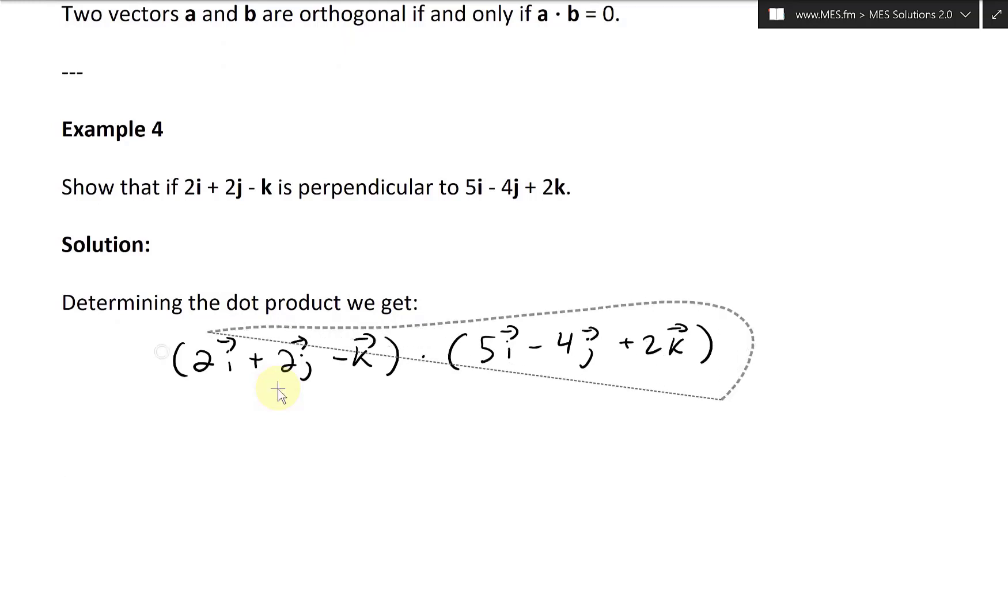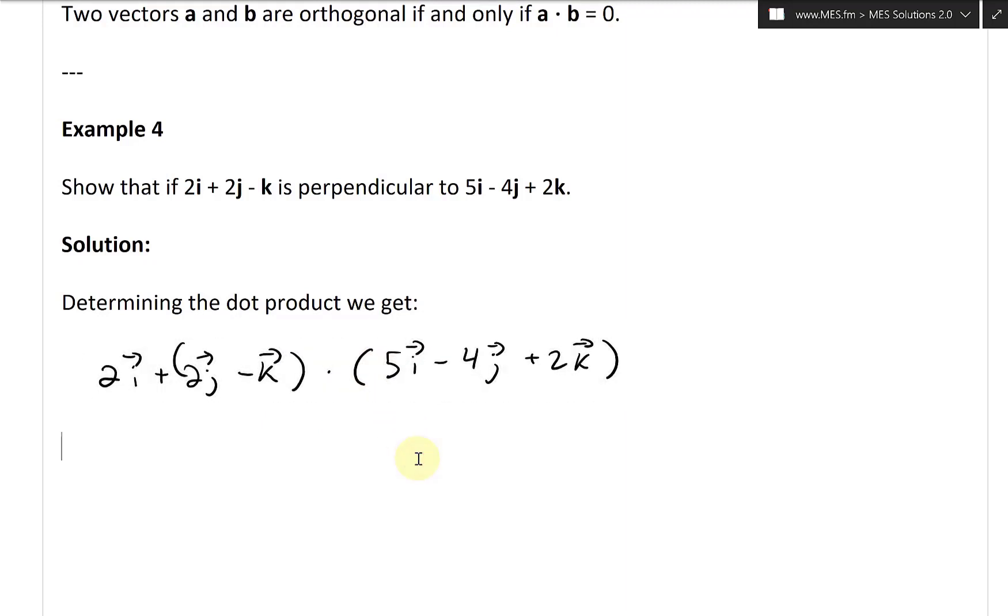And then the dot product, all the component parts here, I'm gonna write this, actually move it to the left. Move it over there. This equals, and I'm gonna put it right here. This is gonna be 2 times 5 plus, 2 times negative 4.